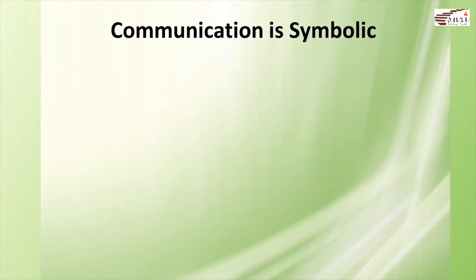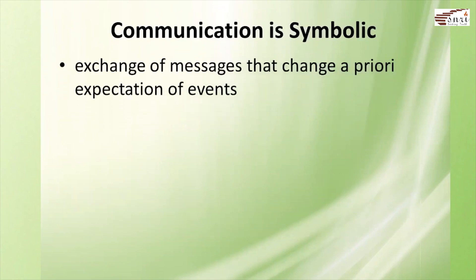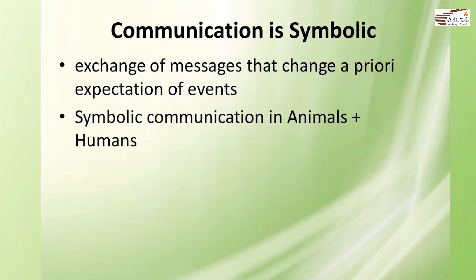Finally, we come to the third point: communication is symbolic. Symbolic communication is the exchange of messages that change a prior expectation of events. Examples of this are modern communication technology and the exchange of information amongst animals. Symbolic communication takes place in animals as well as in humans. Humans also communicate a lot through body language and non-verbal communication, and by referring to objects and ideas not present at the time of communication, a world of possibility is opened.